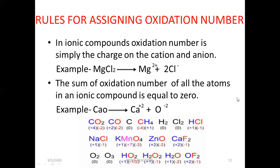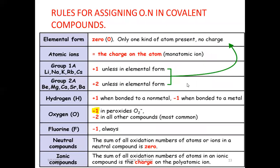Now let us see the rules for assigning oxidation number in covalent compounds. In covalent compounds, oxidation numbers cannot be assigned directly as there is no actual charge, so we follow basic rules. First, any element in its natural or free state has oxidation state equal to zero — for example, H2, O2, P4, Fe, S8. Second, atomic ions: the oxidation state of a cation or anion equals the charge on the ion. For example, the sulfate ion has charge minus 2, so its oxidation state is minus 2. Ammonium ion NH4⁺ has charge plus 1, so its oxidation state is plus 1.